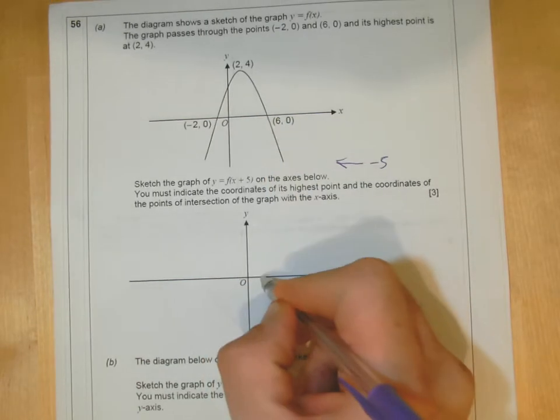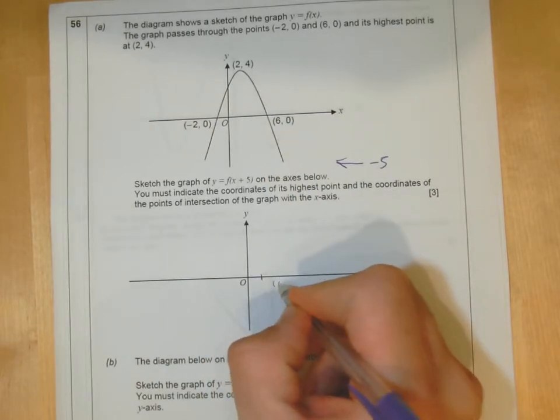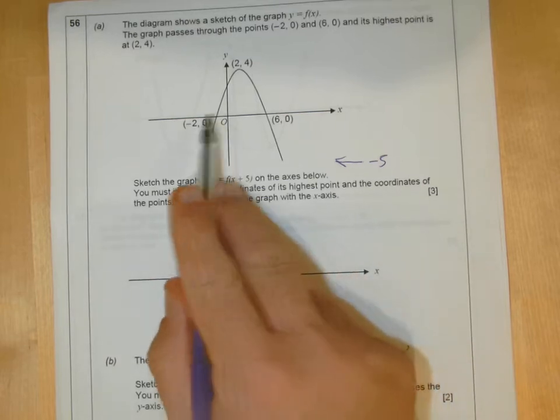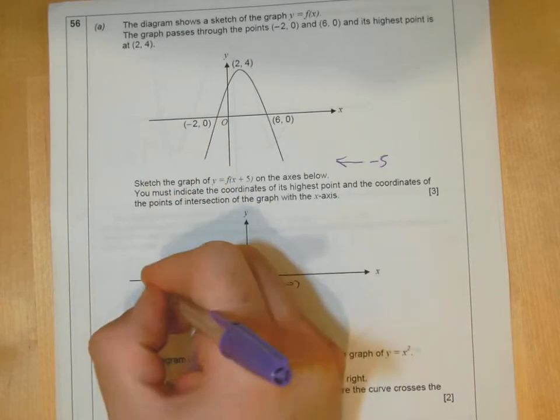So 6, 0 will become 1, 0. Minus 2, backwards would be minus 7.